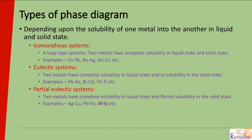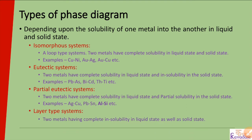Examples of partial eutectic systems are Au-Cu, Pb-Sn, and Al-Si etc. The last type is the layer type of system. In the layer type of system, both metals have insolubility in liquid state as well as in solid state — meaning neither metal is soluble in liquid nor in solid state.